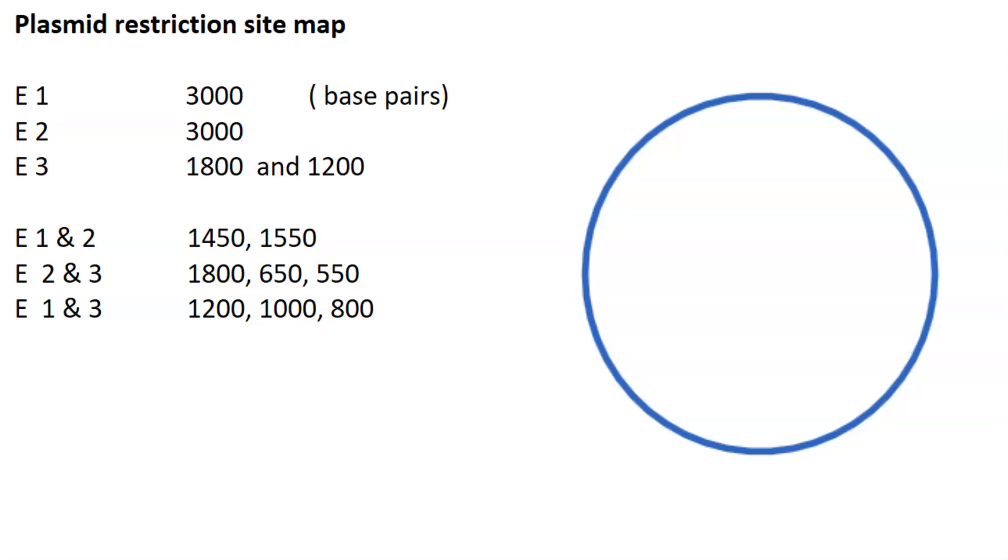So the very first thing that we want to do is establish how big this plasmid is. So we want to look at single digestion, and you can see here is just one fragment, and you can see we only have 3,000 base pairs. And then here's another one from enzyme number two digestion, again, 3,000 base pairs. But if we have two fragments, notice they do add up to 3,000. And if you add all these fragments together, you're going to see that they all add up to 3,000 base pairs. So it means this is how big our plasmid is, 3,000 base pairs total.